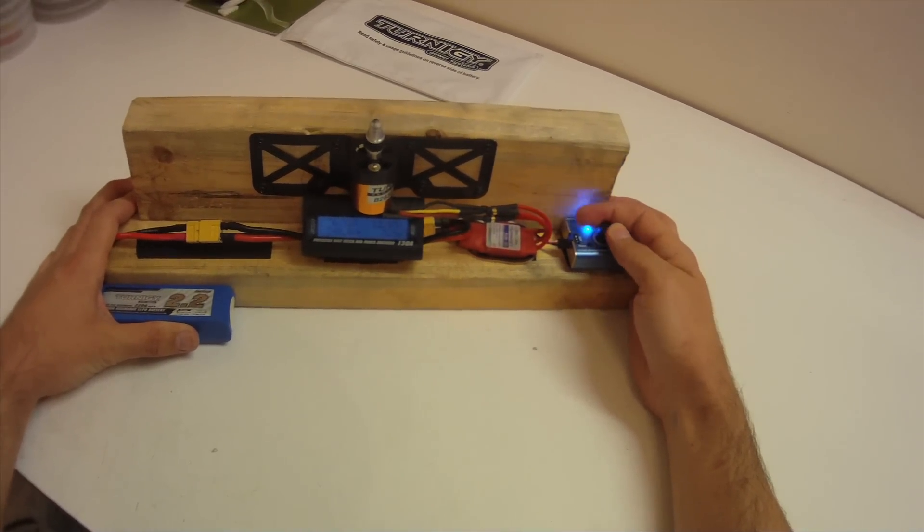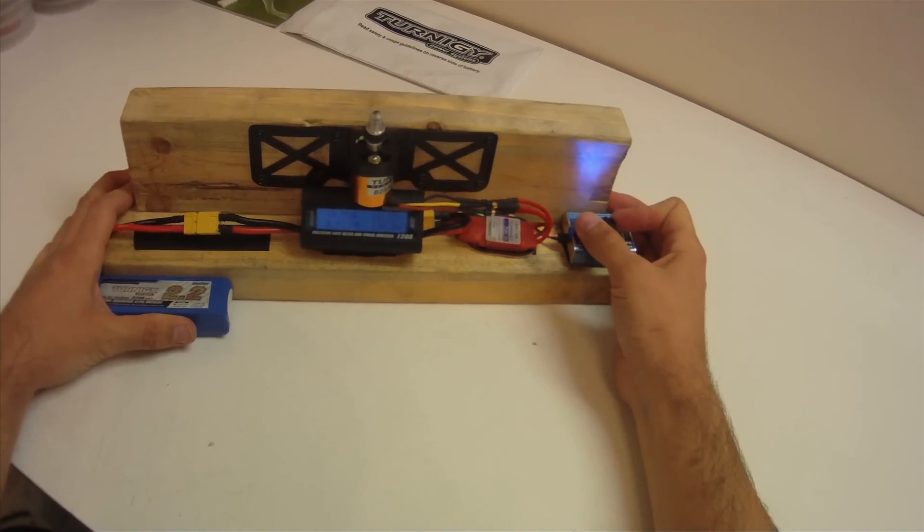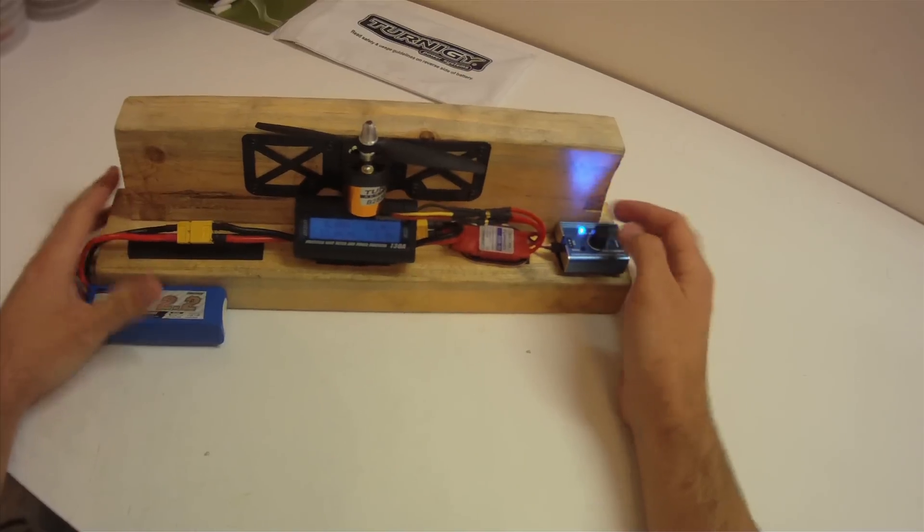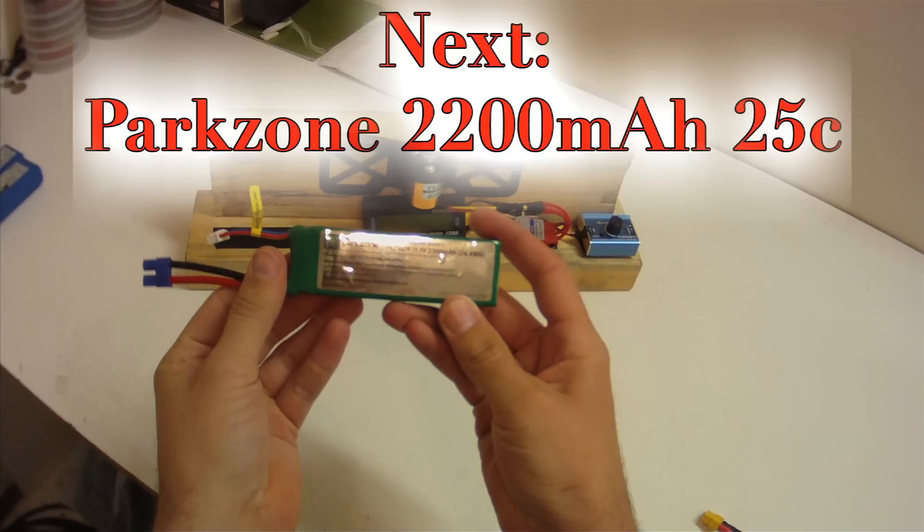Granted, it depends on the plane you're using or the helicopter or the boat, whatever you're using, but for the most part, the higher the C discharge is, the less stress it puts on your battery and the electronics.